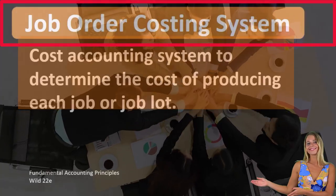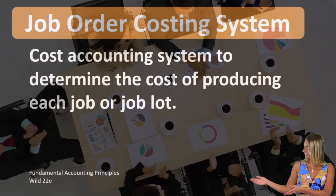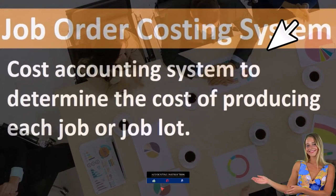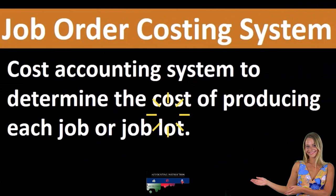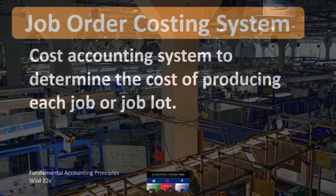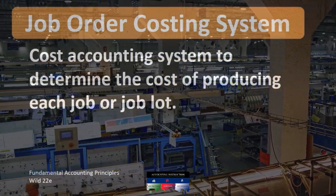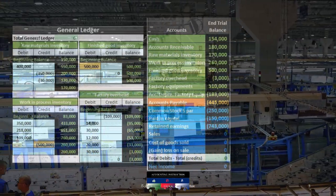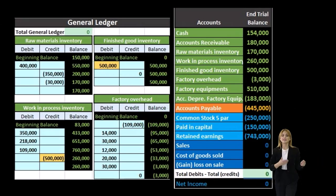When we're thinking about a job order costing system, we are thinking generally of a manufacturing company — a company that manufactures inventory, meaning we're starting with something like raw materials that will then be converted to inventory at the end of the process. The two systems usually used in terms of processing inventory would be the job cost system and a process cost system.